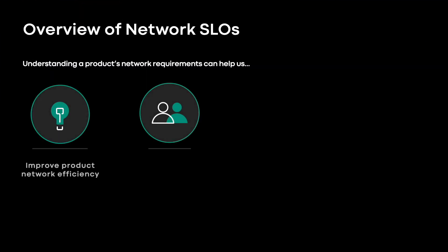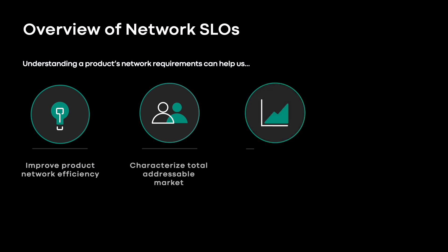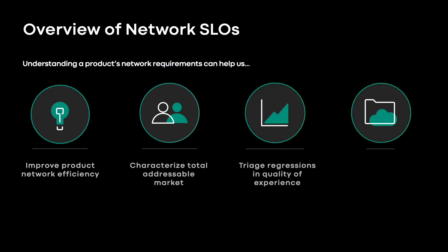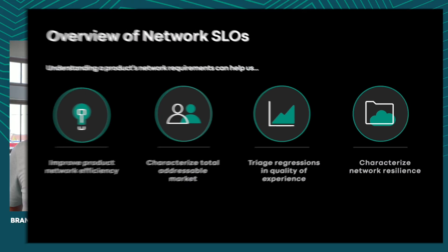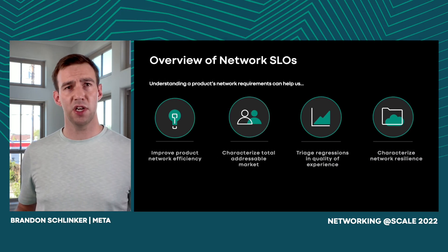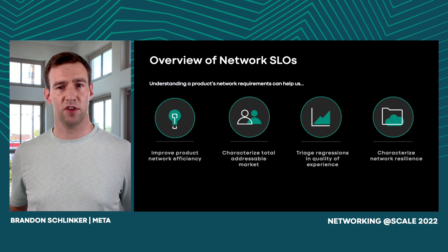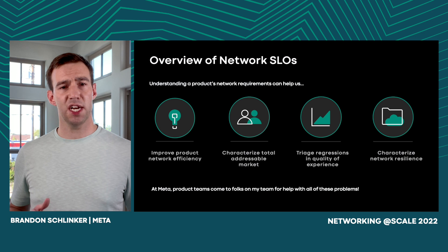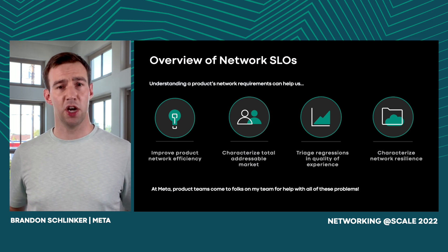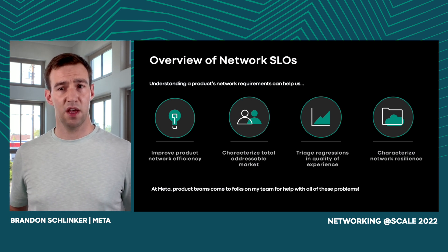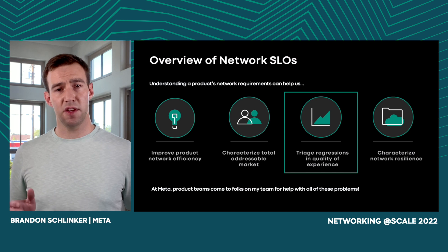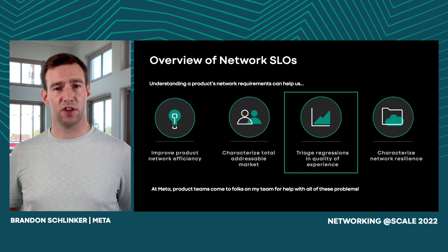That presents both an opportunity and a challenge, because understanding a product's network requirements could help us in multiple ways. We could use it to goal and improve a product's network efficiency, characterize its total addressable market, triage regressions in quality of experience and understand if they're due to the network, and characterize Meta's network resiliency. Product teams come to folks on my team for help with all of these problems.